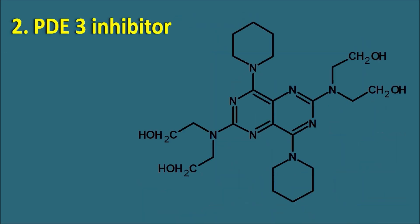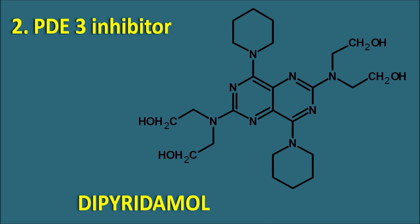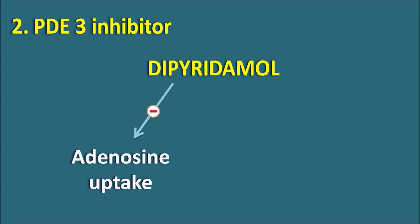The second type of phosphodiesterase type 3 inhibitor is dipyridamole. Its structure is made up of two pyridine rings. Dipyridamole has multiple mechanisms of action: it can inhibit adenosine uptake — adenosine being an important mediator responsible for platelet aggregation — thereby inhibiting adenosine-related activities. Dipyridamole can also directly inhibit the phosphodiesterase type 3 enzyme, increasing cyclic AMP as well as cyclic GMP levels. These raised levels produce vasodilatation as well as inhibition of platelet aggregation. This drug can also increase prostacyclin activity, which decreases platelet aggregation by producing vasodilatation. In this way, dipyridamole acts as an anti-platelet agent by multiple mechanisms.